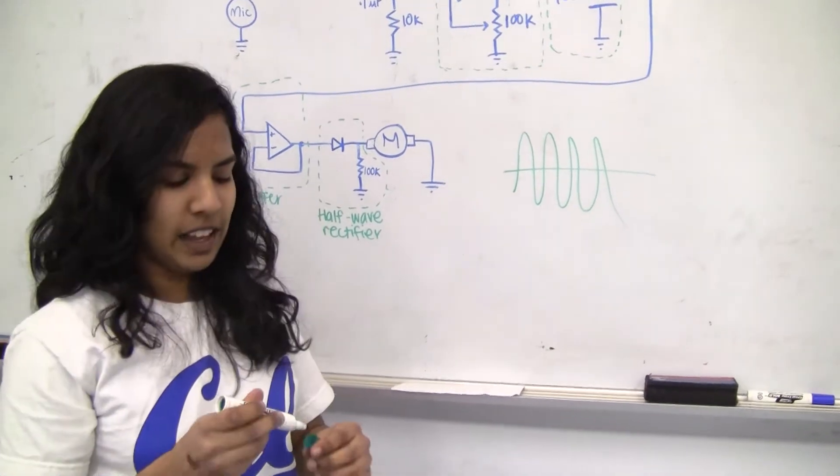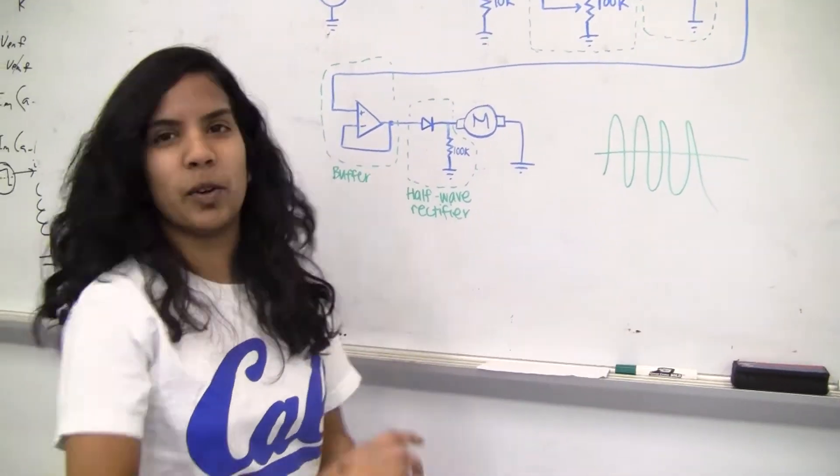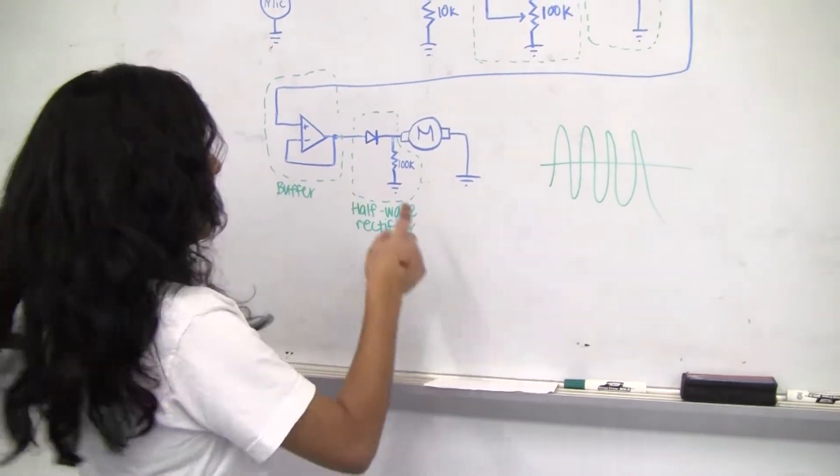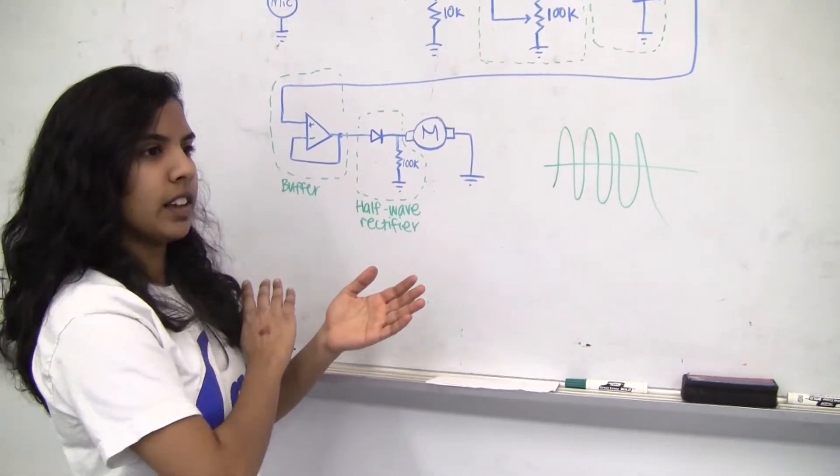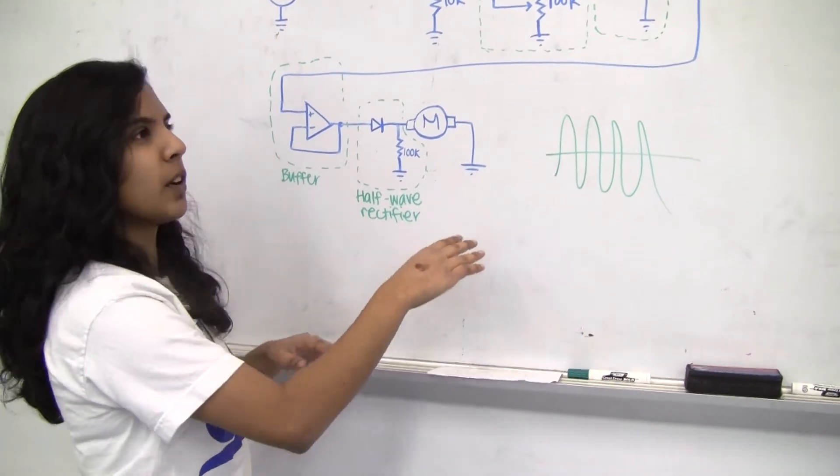That would not work out for our motor because the motor can't read it fast enough. So we put that through a half wave rectifier to get rid of all the negative voltage so that only positive voltage is going to the motor.